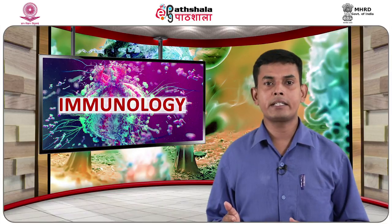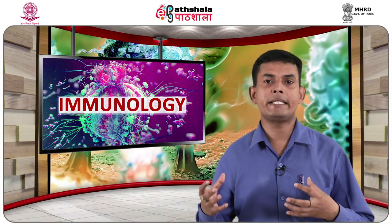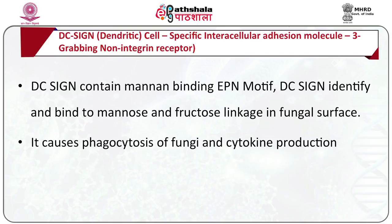DC-SIGN, the dendritic cell-specific intracellular adhesion molecule-3 grabbing non-integrin receptor, was discovered in the human genome as a cluster of genes encoding DC dendritic cell receptors related to three members of the same type. They are found on skin and mucosa, and some macrophages also exhibit DC-SIGN receptors. DC-SIGN contains a mannose-binding EPN motif, identifies and binds to mannose and fucose linkages on the fungal surface, causing phagocytosis of fungi and cytokine production.